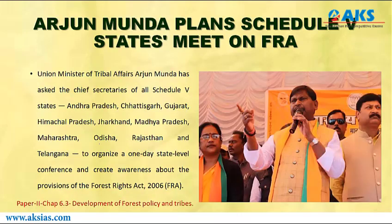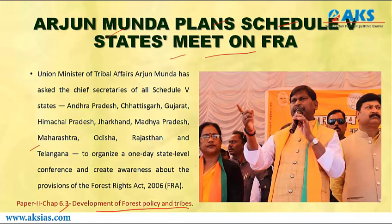The second article is: Arjun Munda plans a Schedule 5 states meet on FRA — the Forest Rights Act. This comes under Paper 2, Chapter 6.3, which talks about the development of forest policy and tribes. The union minister of tribal affairs Arjun Munda has asked the chief secretaries of all Schedule 5 states — which include Andhra Pradesh, Chhattisgarh, Gujarat, Himachal Pradesh, Jharkhand...